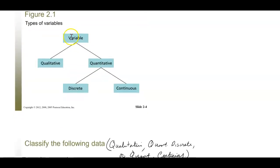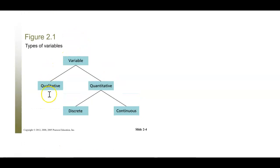So we have variables. Variables that are qualitative are your descriptive variables. Variables that are quantitative are numerical — they either can be counted, meaning they're discrete, or cannot be counted, meaning they are continuous.